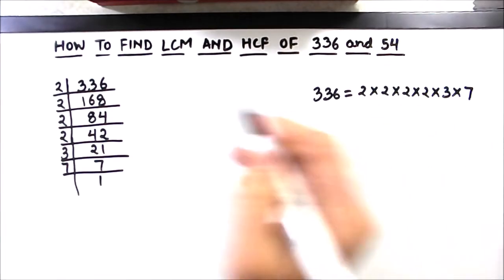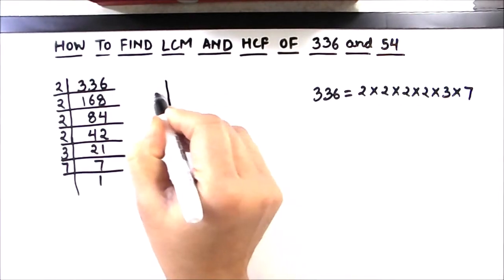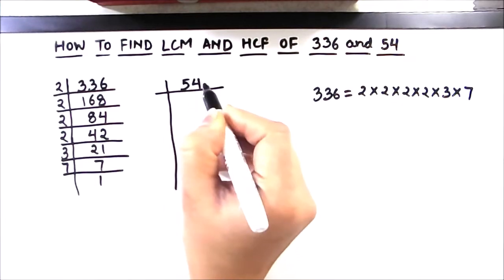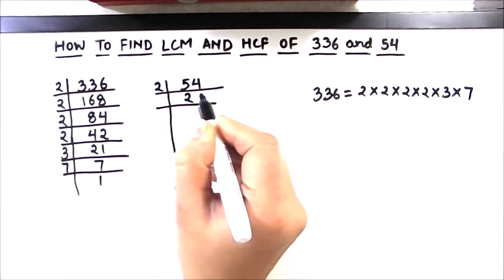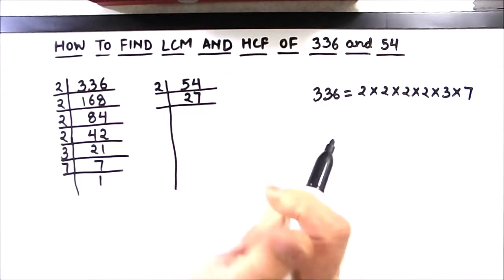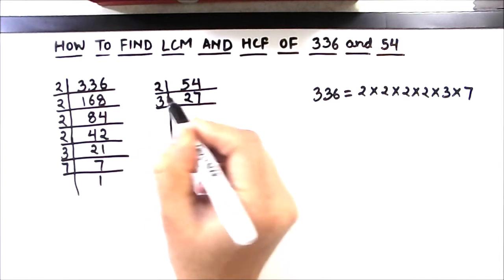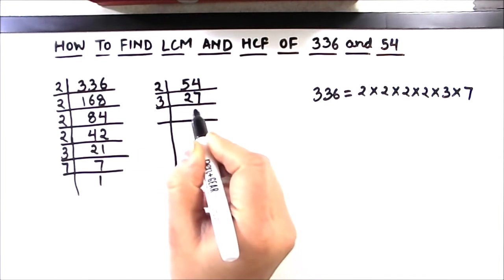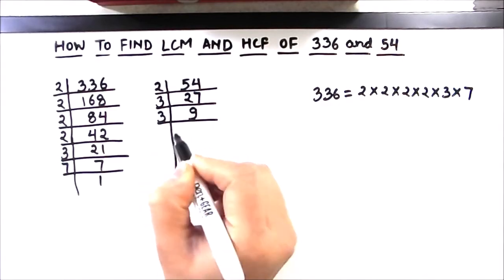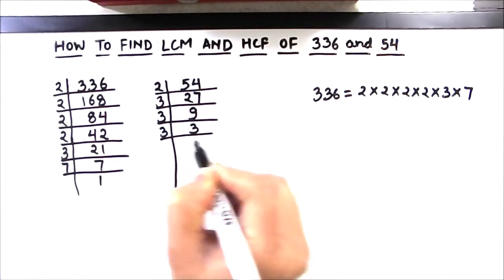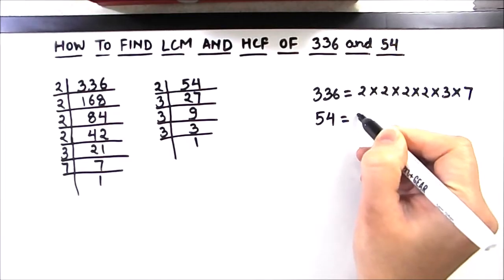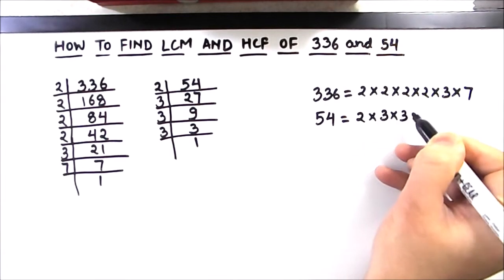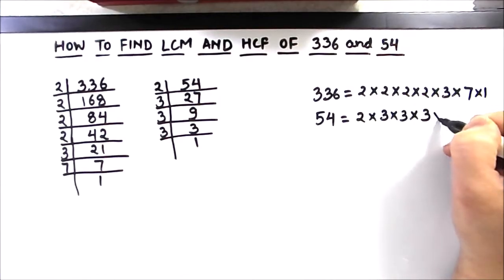Now we will find the factors of 54 by the same method. 54 is an even number, so it is easily divisible by 2, giving 27. Now 27 is an odd number and it is easily divisible by 3. 3 times 9 is 27, and 3 times 3 is 9. So the prime factors of 54 are 2 × 3 × 3 × 3. 1 is also a factor of both numbers.